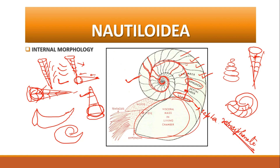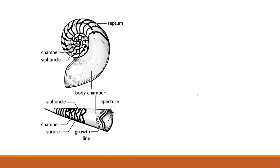When the septal necks are projecting toward the proto-conch, they are known as retro-siphonate. In a nautiloidic shell, the septa divide the chambers, the body chamber is where the animal resides, and the siphuncle passes through the center of the septa. If the siphuncle passes through the margin of the septa, it is an ammonite shell.